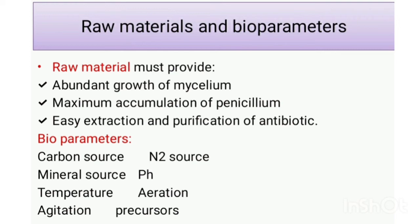Another bioparameter is pH, which should be near 6.5. The temperature should be between 26 to 28 degrees Celsius. For aeration, a continuous stream of sterile air is pumped into the fermenter, so aeration is necessary in this process. Agitation is provided through baffles.